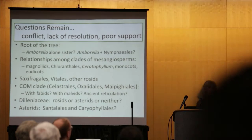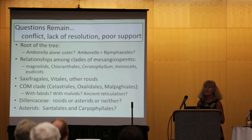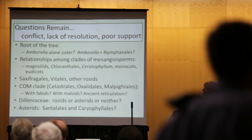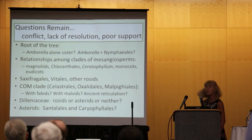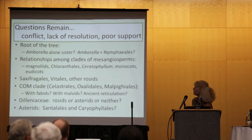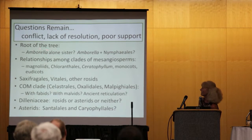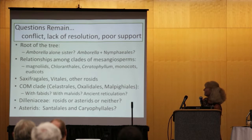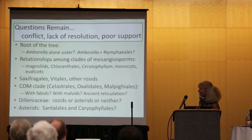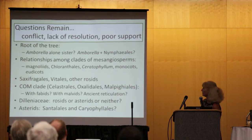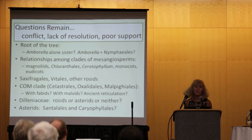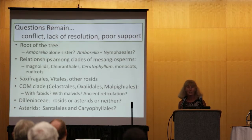What I'd like to do today is focus on a sample of these questions and what the 1KP data may say about them. The first problematic area is the root of the tree. The big question is: is Amborella alone the sister group to the rest of the extant angiosperms, or are Amborella in a clade that is sister to the rest? There are also questions about the relationships among the clades of the mesangiosperms — the Magnolias, Chloranthales, Ceratophyllum, the Monocots, and Eudicots.